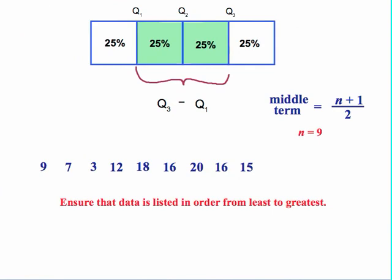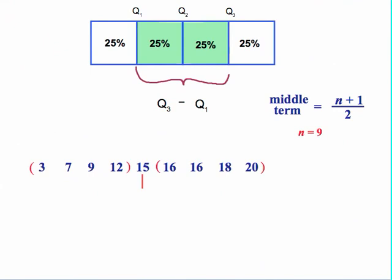Here we have an odd number of data values. This time we have 9 data values. Again, the first thing that we have to do since we're dealing with the median is we have to ensure that the data is in order from least to greatest. So we put them in order. 9 plus 1 is 10 divided by 2 is 5, so I know that our middle term is going to be the fifth term, which in this case is going to be a 15. Then we have to find the median of the lower half of the data and the upper half of the data.